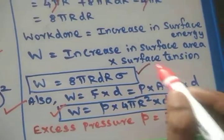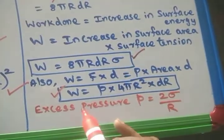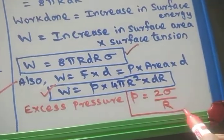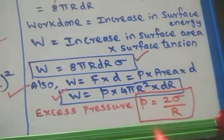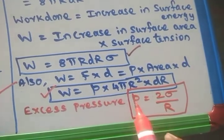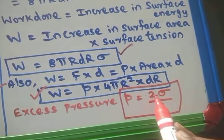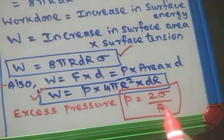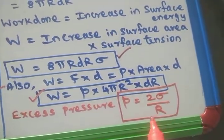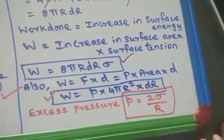So this work and this work will be equal. Now equating these two expressions, we get P equal to 2 sigma by R. So the excess pressure inside the liquid drop is 2 sigma by R, where sigma is the surface tension and R is the radius of the liquid drop.